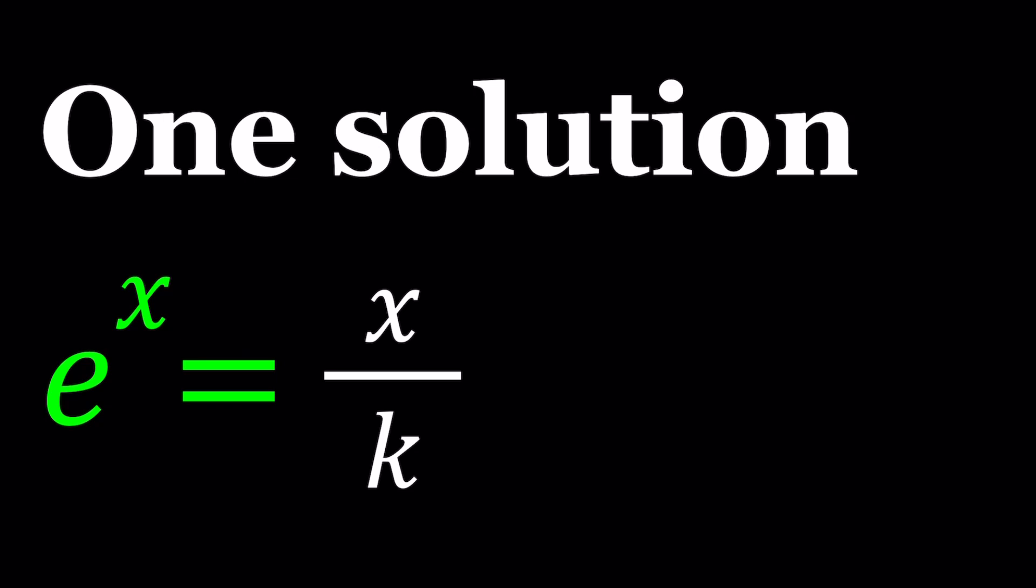First of all, let's multiply both sides by k, knowing that k does not equal 0, because if it's 0, then we'll have a problem, and we get k e to the x equals x. Awesome. This is nicer because we have an exponential and a line. They're both nice, but I just like to keep it this way.